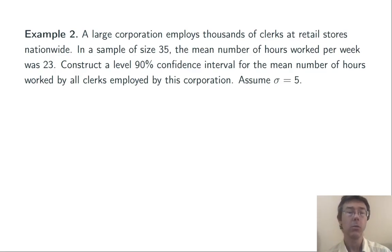Assume sigma equals 5, the standard deviation for the number of hours worked per week by clerks at this corporation. We're going to use the same formula for the confidence interval. Mu is approximately equal to x-bar plus or minus z-star sigma over the square root of n.